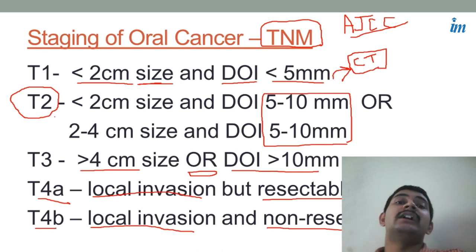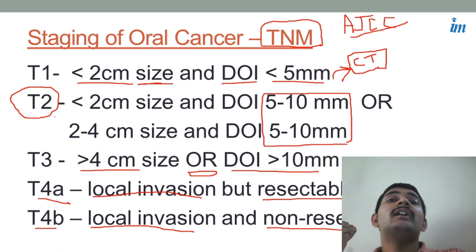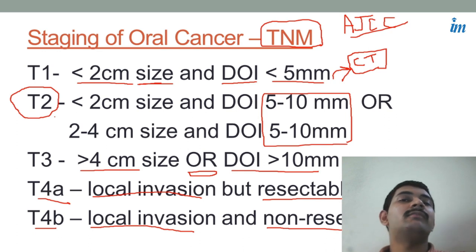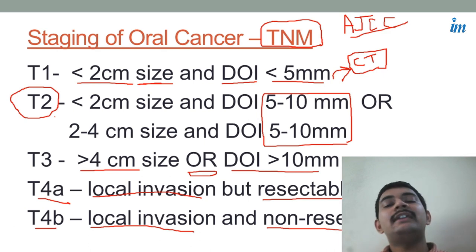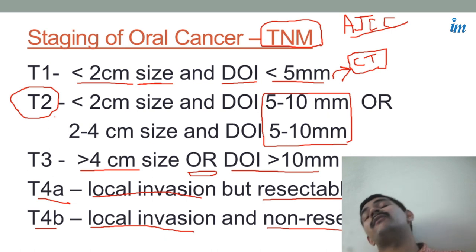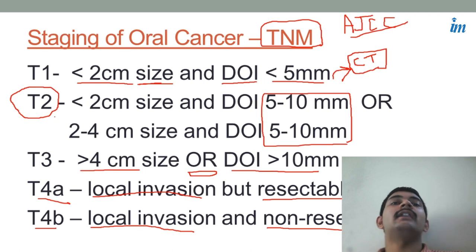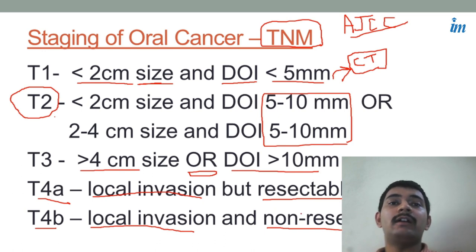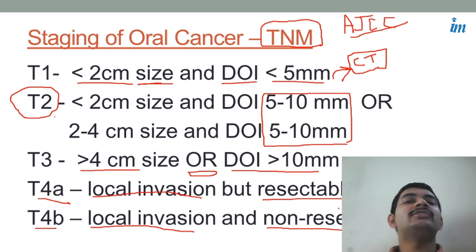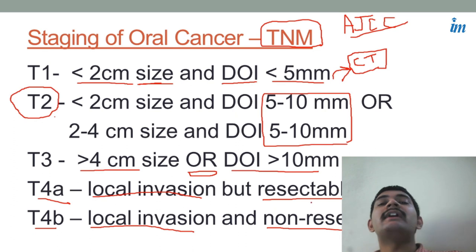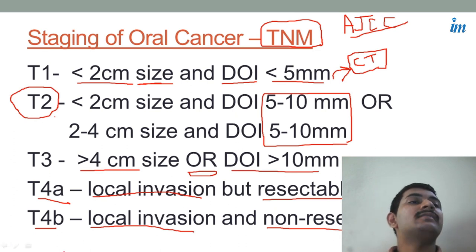T4B is non-resectable — if it is involving nerves or the base of skull. The base of skull involves important cranial nerves: cranial nerve seven coming from the stylomastoid foramen, then nerve nine, ten, eleven, and twelve. So many cranial nerves come from the skull base that if any of those nerves are involved, you cannot operate. Also, there is the internal carotid artery entering inside the skull. If the tumor is reaching there, you cannot cut the specimen safely because even a slight change in the margin of cutting can lead to catastrophic bleeding. So it is very important to understand what a non-resectable tumor is, and that comes under T4B.